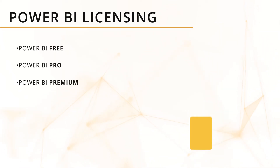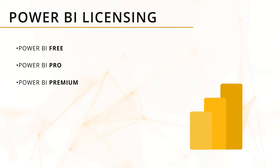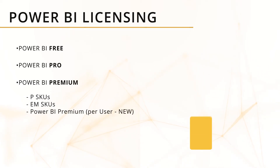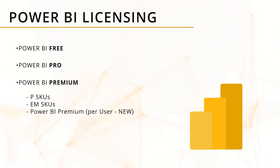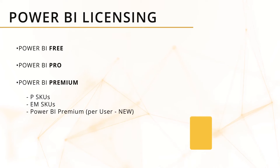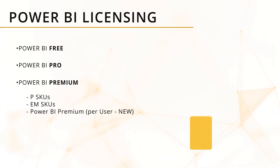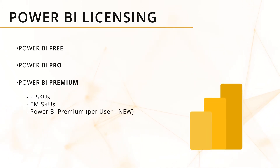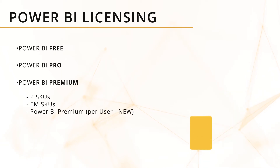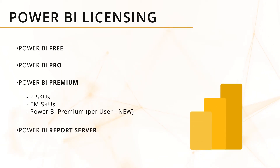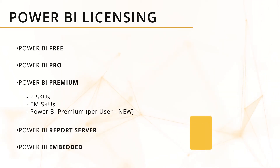The three types of premium SKUs we're going to be talking about are the P SKUs, the EM SKUs, and then the semi-new Power BI Premium Per User, which just came out this year. Then we have Power BI Report Server and last but not least, Power BI Embedded.